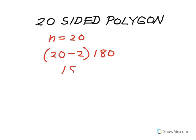And I get eighteen times 180 degrees, or 3,240 degrees. Notice, as the number of sides gets larger, the sum of the measures of all of the interior angles gets larger, too.